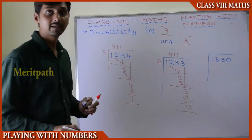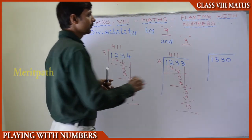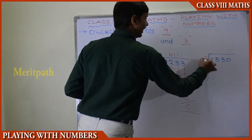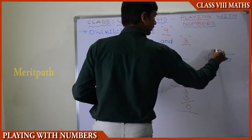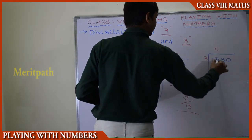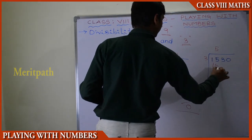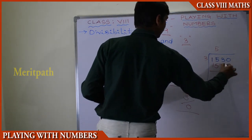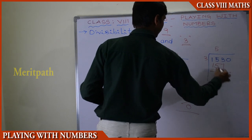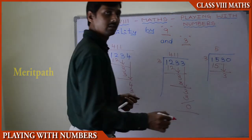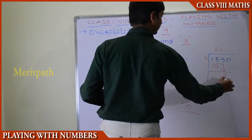We have taken 1,000-something (around 1,030). Dividing by 3: it cancels by 5 times — 5 times 3 is 15. Then bringing down the next digit, it cancels by 1 time, giving 1 times 3 is 3.